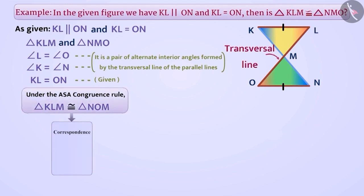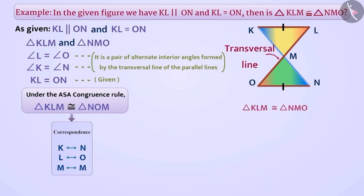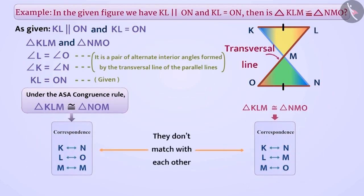Here is the correspondence: K corresponds to N, L corresponds to O, M corresponds to M. But if we look at the given relation of congruence, it gives us a different correspondence. The correspondence of both conditions are not satisfied. Hence, triangle KLM is not congruent to triangle NMO.